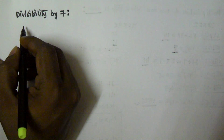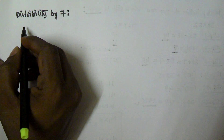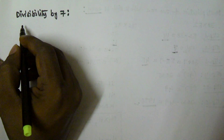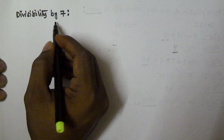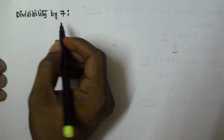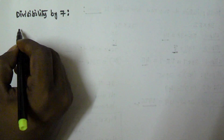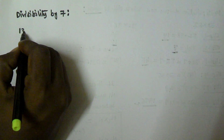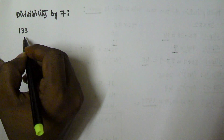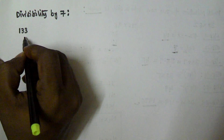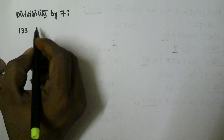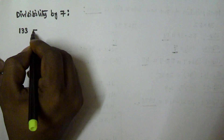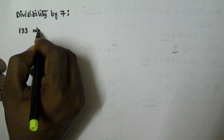Hello friends, in this video I will explain the divisibility by 7 rule. Let us take a number — 133 — and we will check whether this number is divisible by 7 or not.